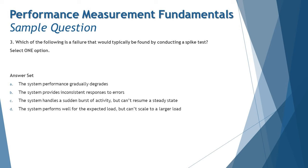When we have a great number of users logging in or working on the application at the same time suddenly, there's a great spike on the graph. So which of the following is a failure that would typically be found by conducting spike testing?